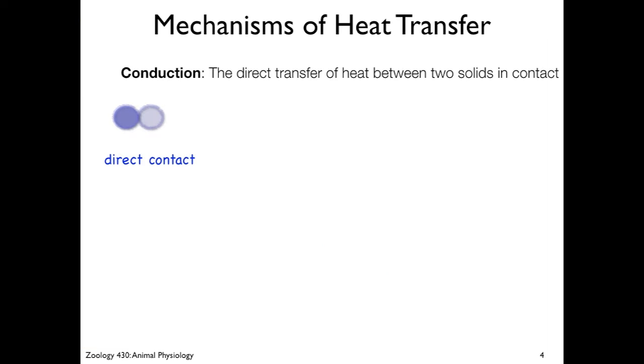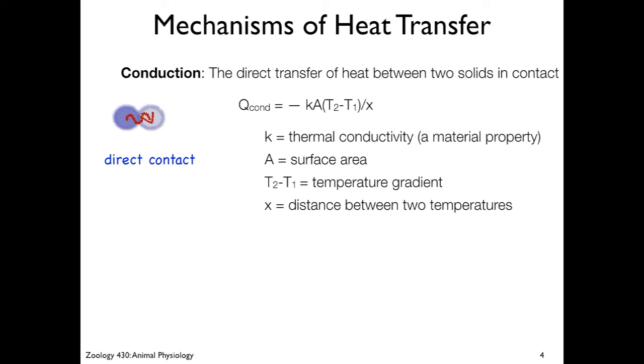So what are these mechanisms of heat transfer? There's conduction, which is the transfer of heat through two solids that are in direct physical contact. If one is hotter than the other, then the heat is going to go from hot to cold. It's governed by this equation. The rate of heat transfer through conduction is related to the thermal conductivity constant, which is a material property of the solid. It's going to be related to the surface area that's in contact, the temperature gradient between the two, or the difference in temperature, and then the distance between the two temperatures.